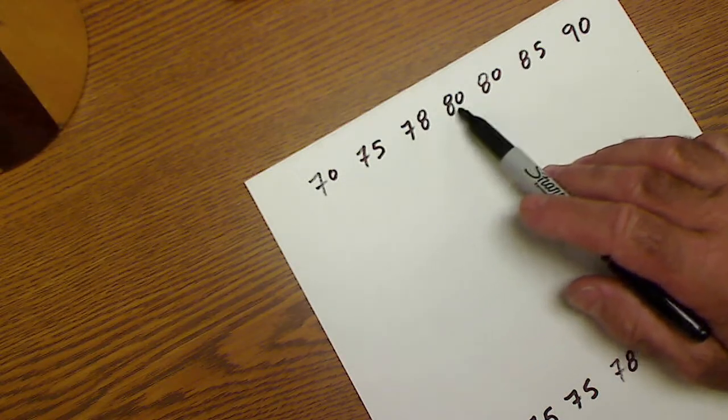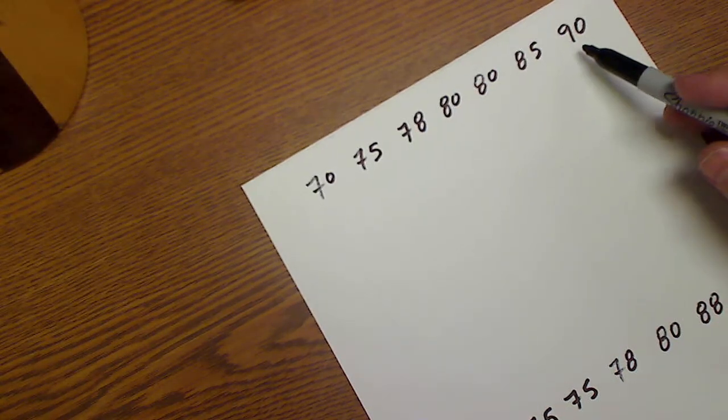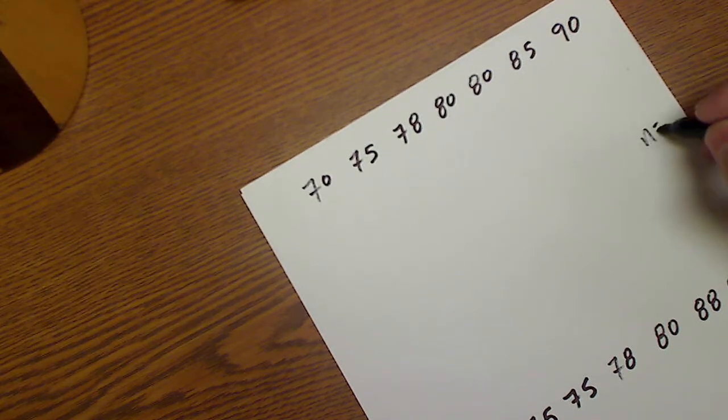I have one, two, three, four, five, six, seven scores. So n is equal to seven. That's the number of scores I have.